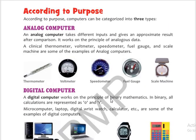According to purpose, computers are divided into three types: analog, digital, and hybrid. An analog computer takes different inputs and gives an approximate result. The meaning of approximate is that it is not 100% — it is 99.99% — after comparison. It works on the principle of analogous data.